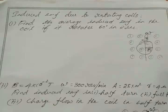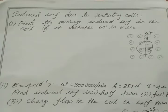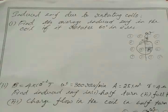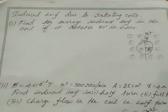Faraday's second law states that the magnitude of induced EMF is equal to the rate of change of magnetic flux: EMF = d(phi)/dt. To find the direction of induced EMF, we use Lenz's law. The direction of induced EMF always opposes the cause responsible for its production.